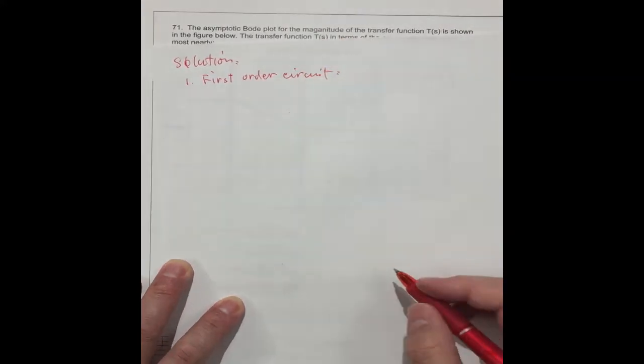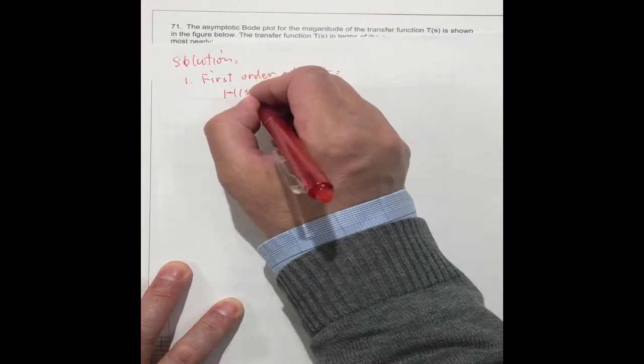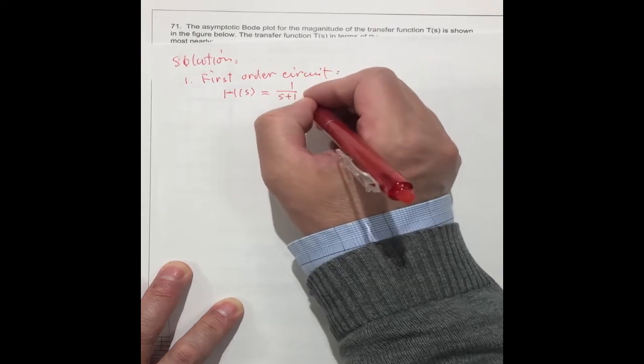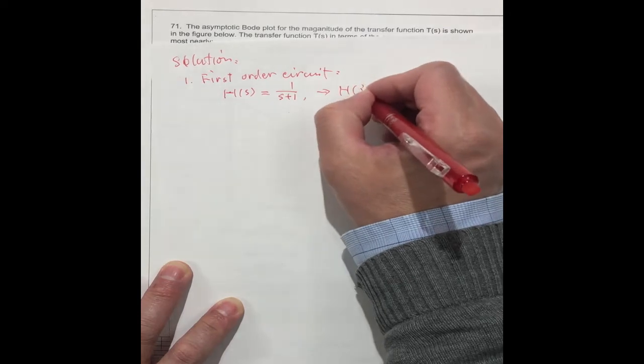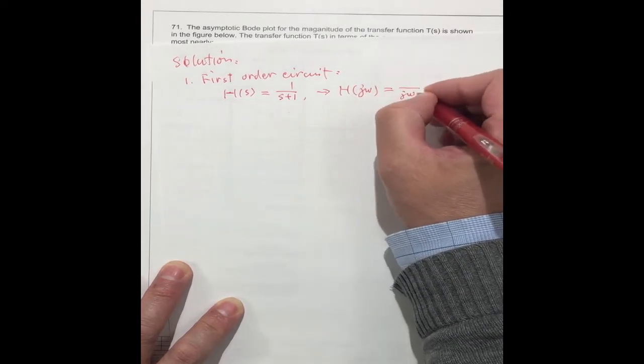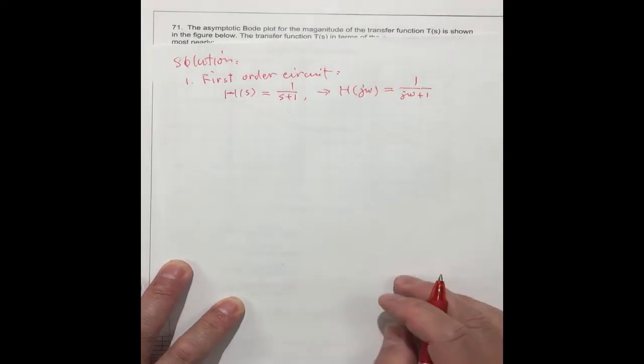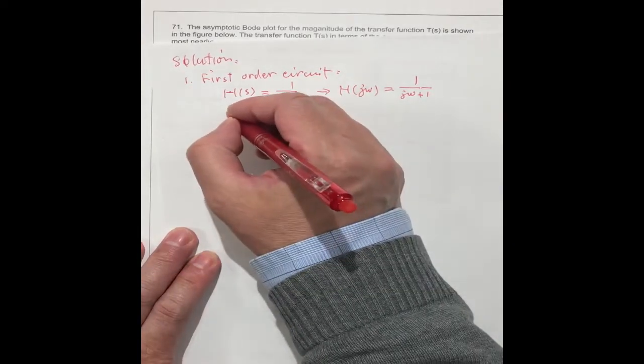We know if one function F(s) is equal to s plus 1, we can see this is the F. It can transfer to jω equal to jω plus 1.